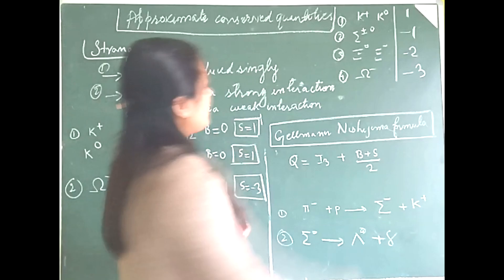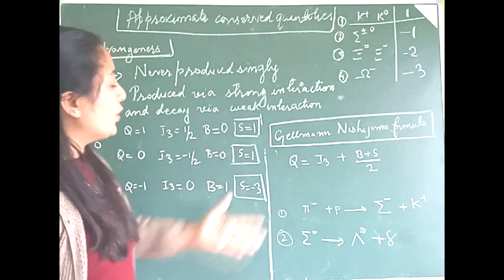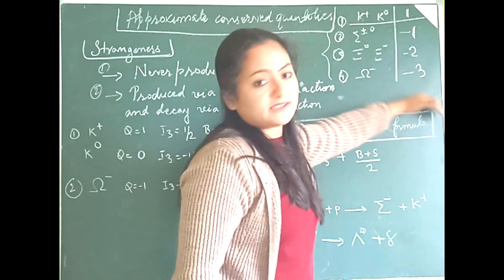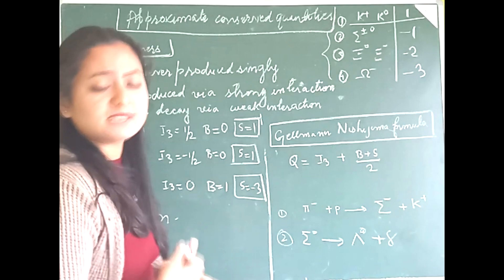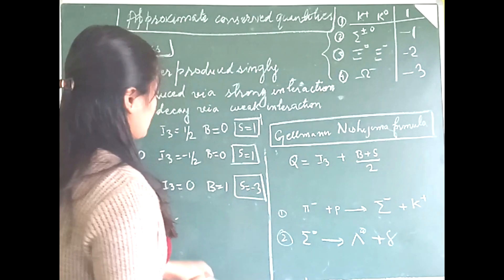One important point: for kaons, strangeness is positive, whereas for hyperons it is negative. Strangeness for all non-strange particles like protons and neutrons is zero, and for strange particles it is non-zero — either +1, −1, −2, or −3.